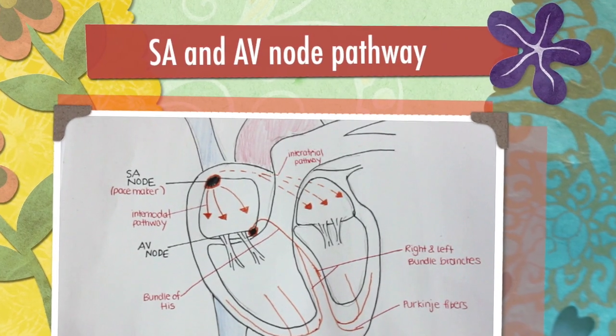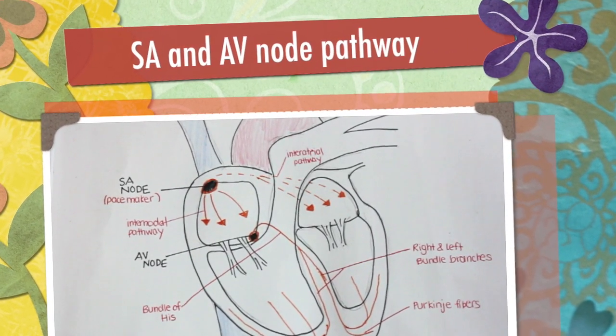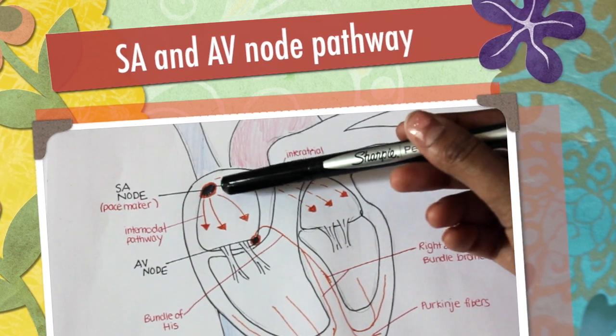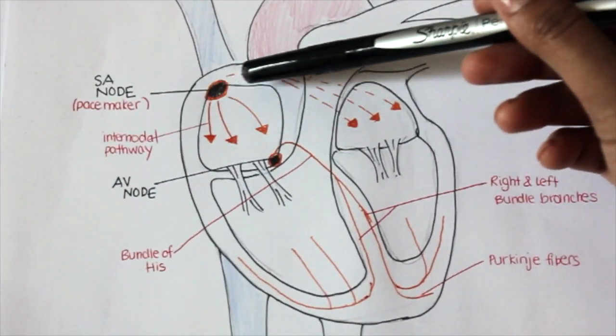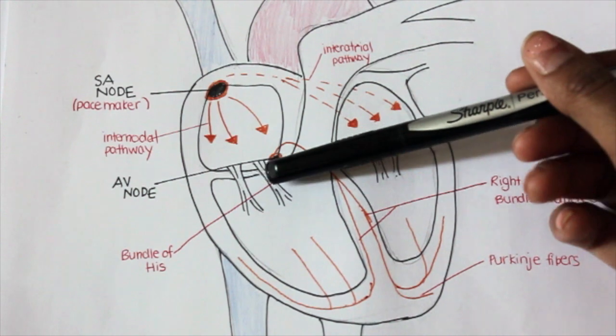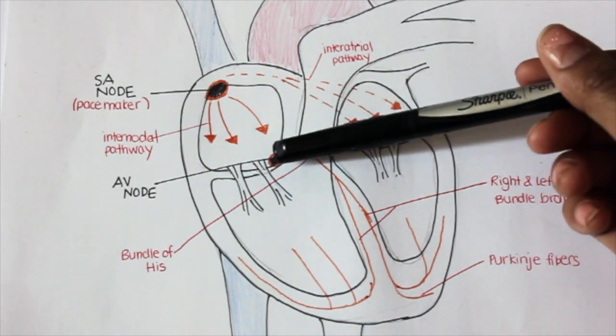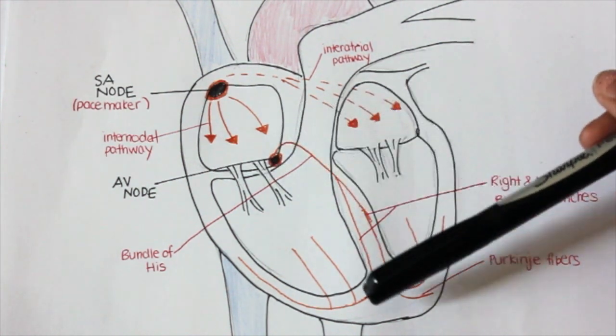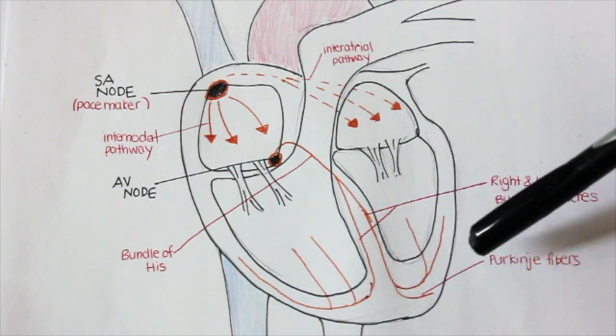In the heart's conducting system, there are a few parts you should be familiar with: the SA node, the internodal pathways, the interatrial pathway, the AV node, the bundle of His, the right and left bundle branches, and the Purkinje fibers.